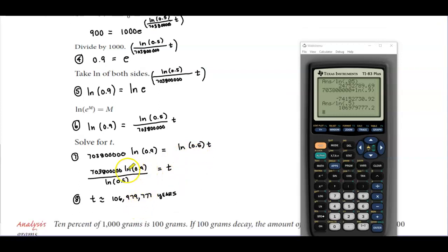And then we can approximate this, plugging this into our calculator. So if we take 703,800,000, multiply that by the natural log of 0.9.